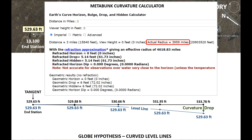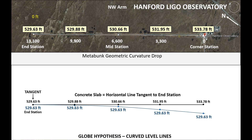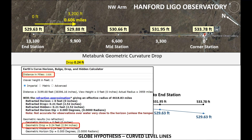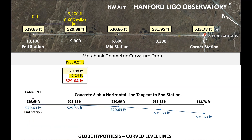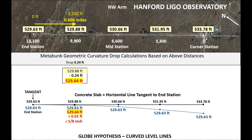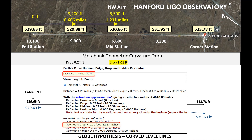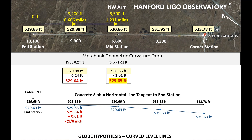I use Metabunk for my curvature calculations, based on a radius of 3,959 miles. My calculations are based on the distance from the end station. The first calculation, at a distance of 0.606 miles, gives a drop of 0.24 feet. Subtracting that from the beam slab elevation gives 529.64 feet, and comparing that to the level line elevation of 529.63 feet, the difference is only 0.01 feet — less than an eighth of an inch. The next calculation at 1.231 miles gives a drop of 1.01 feet, yielding 529.65 feet, a difference of 0.02 feet — less than a quarter inch.